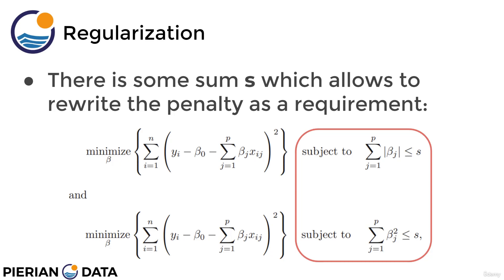Same thing for ridge regression: on the bottom there is the residual sum of squared errors that you're trying to minimize, however you're subject to the squared beta coefficients being less than or equal to some sum s. The reason we're not really defining what s could be is because it's going to change depending on your feature set. We are separating out the residual sum of squares versus the penalty in order to later plot this on the coefficient plane.